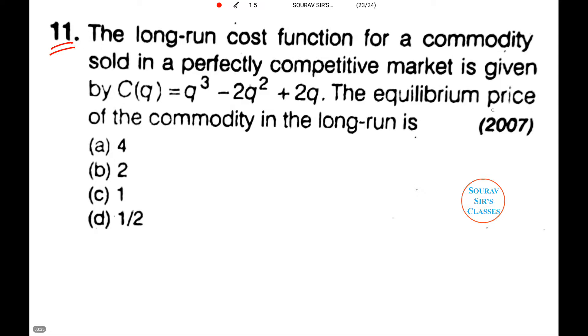The first question is question number 11, which we are going to solve in this tutorial. It came in the year 2007. The question is: the long-run cost function for a commodity sold in a perfectly competitive market is given by C(q) = q³ - 2q² + 2q. The equilibrium price of the commodity in the long run is. So we need to comment on the equilibrium price.